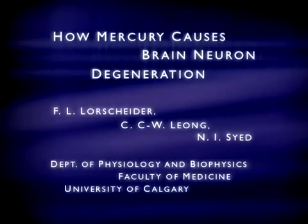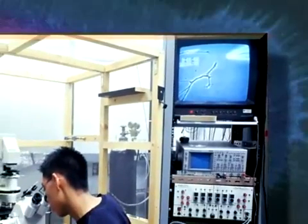How Mercury Causes Brain Neuron Degeneration. Mercury has long been known to be a potent neurotoxic substance, whether it is inhaled or consumed in the diet as a food contaminant.